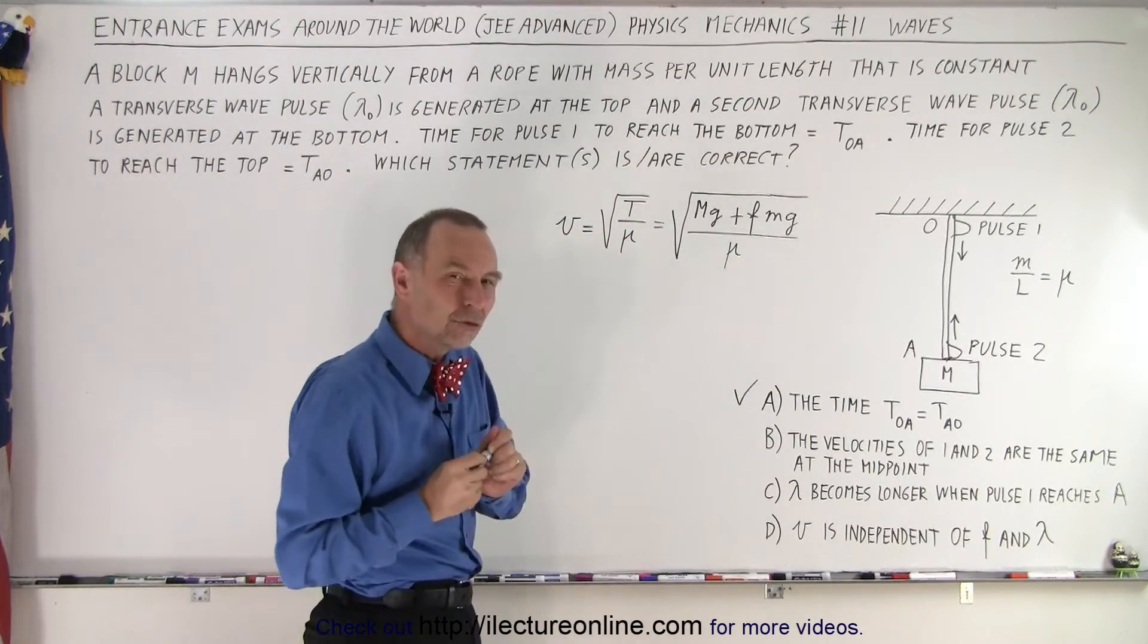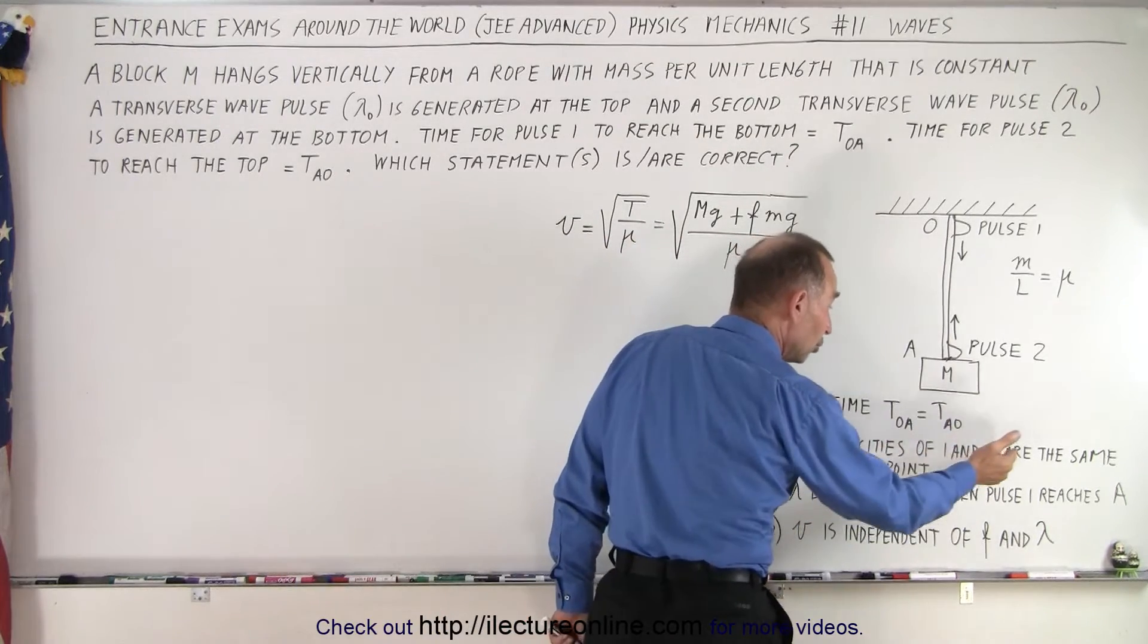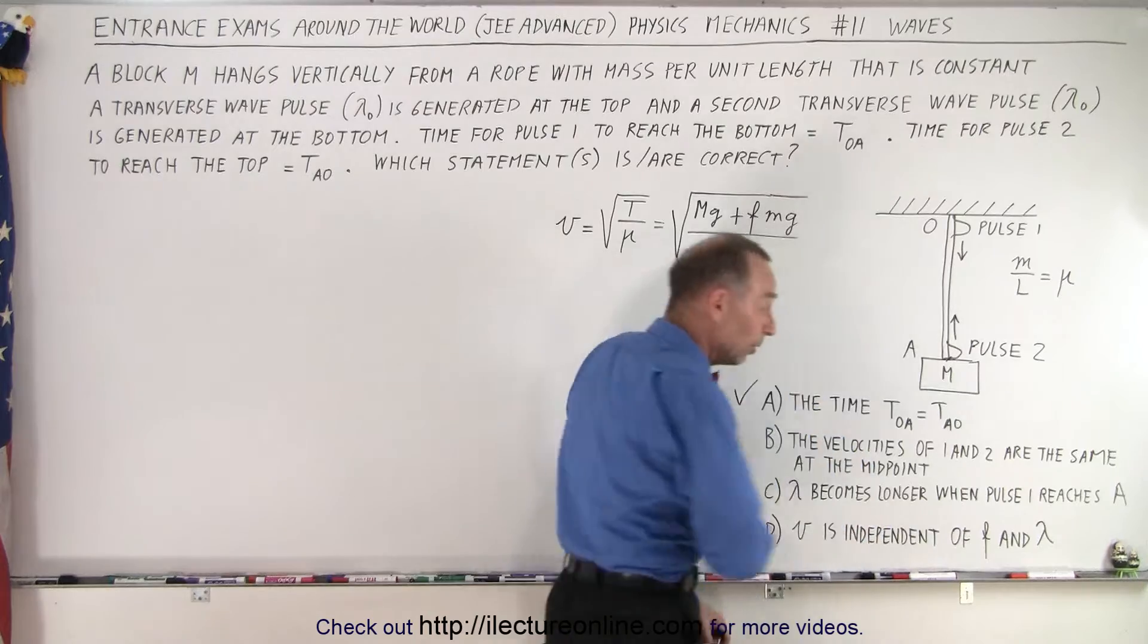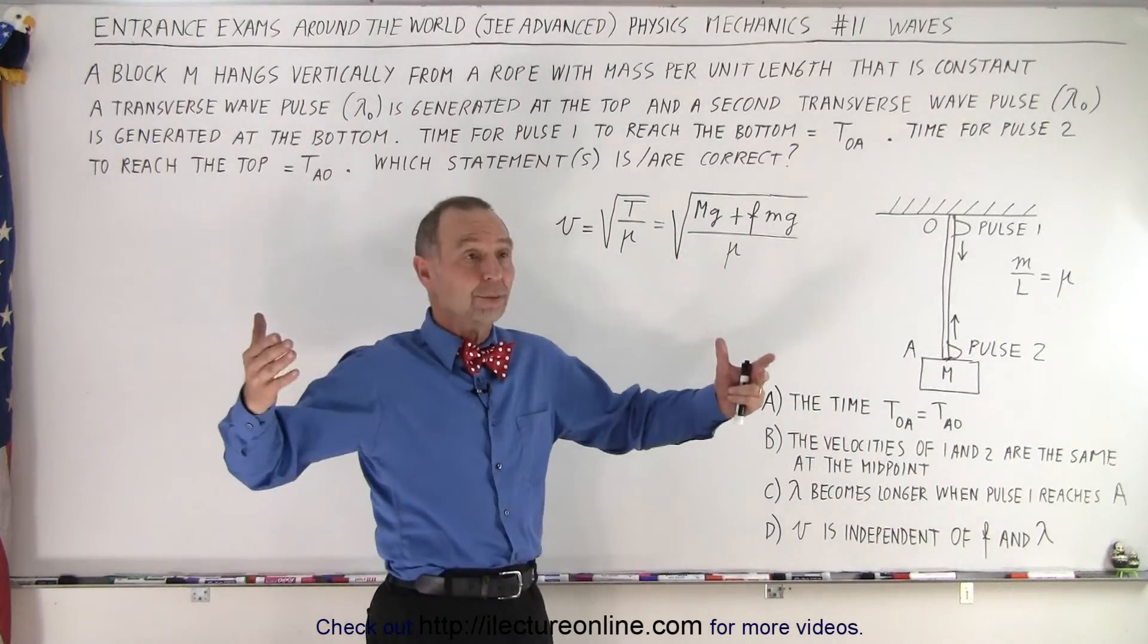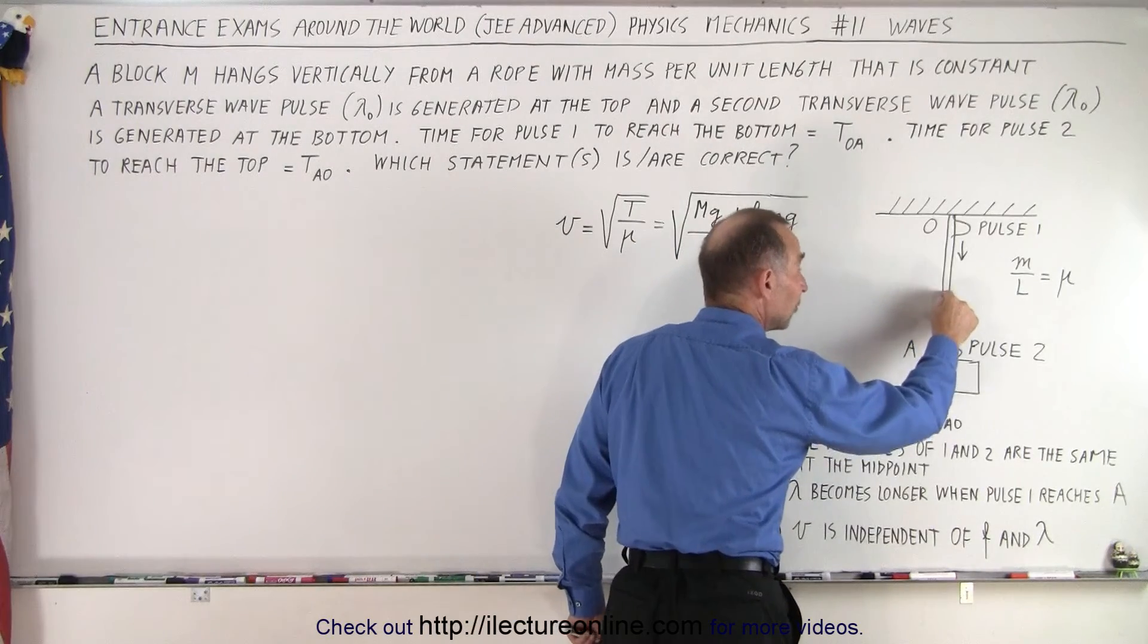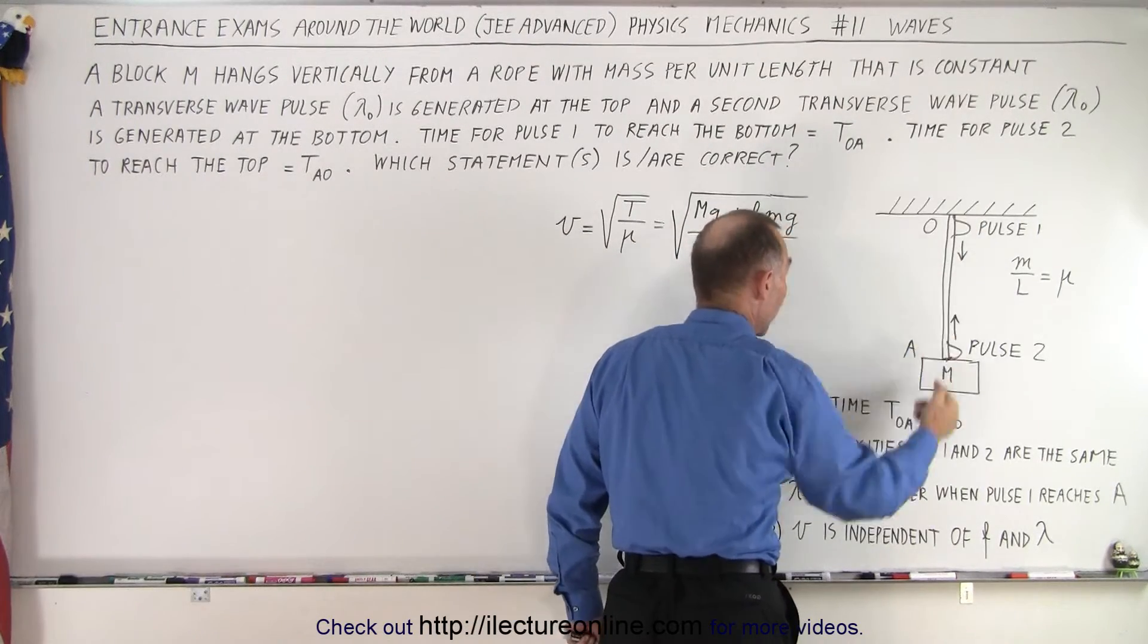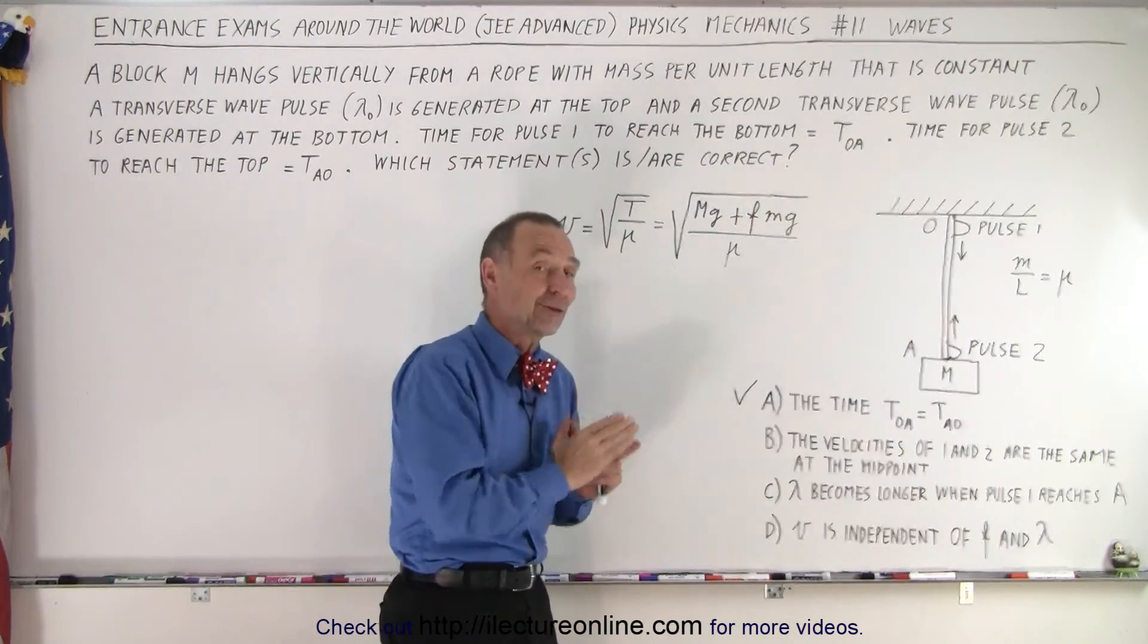Here is the tricky part. They ask us, are the velocities of one and two the same at the midpoint, for both pulses of course? My initial answer would be of course they're the same, because at that point the tension at that point is the same for both pulses, regardless if the pulse goes down or the pulse goes up. But of course, velocity is a vector quantity.